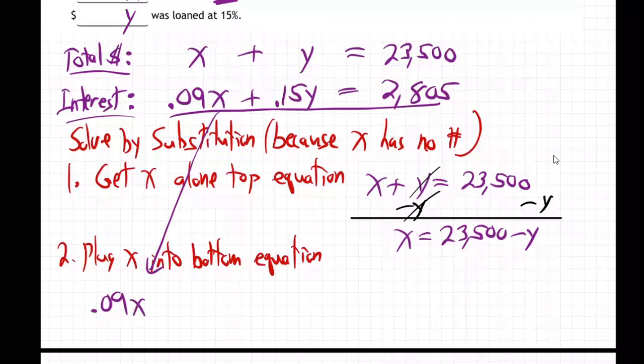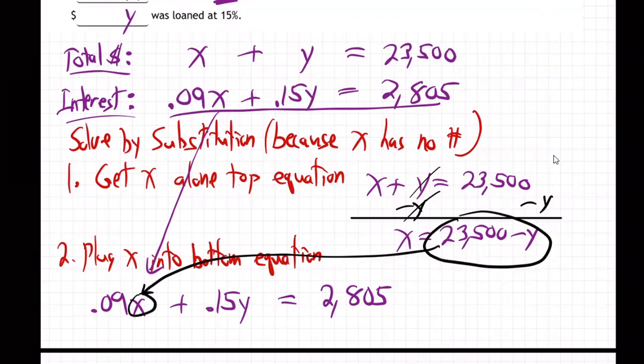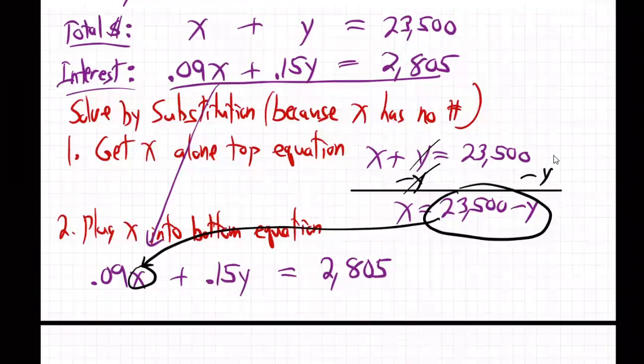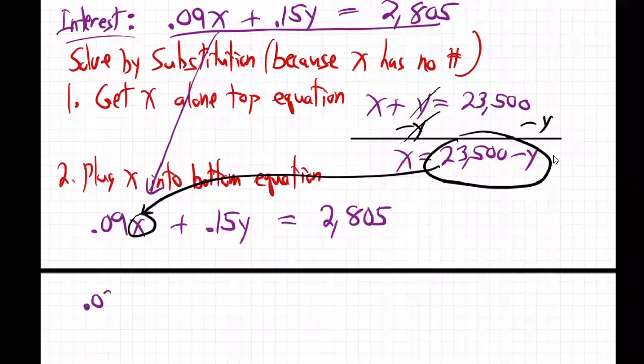And put this one down here, 0.09X, 0.15Y. 0.09 times 23,500 minus Y plus 0.15Y is 2,805.